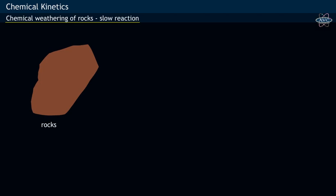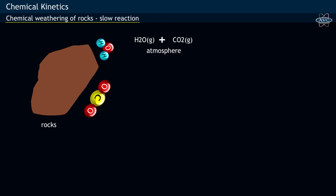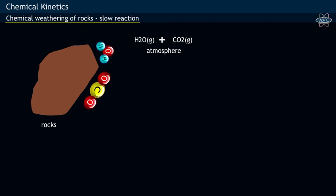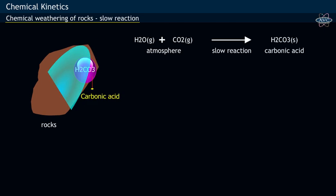Chemical weathering of larger rocks is a slow reaction. During the chemical weathering process, water and carbon dioxide gas from the atmosphere combine and result in the formation of carbonic acid.